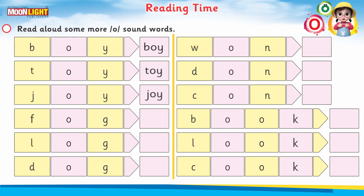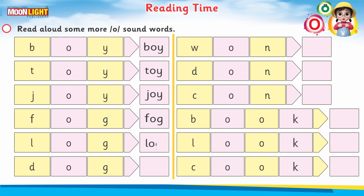Boy, toy, and joy. Now kids, read the spellings again: F-O-G, 'fog.' F-O-G, 'fog.' L-O-G, 'log.' L-O-G, 'log.' This is 'log.' The last one is D-O-G, 'dog.'